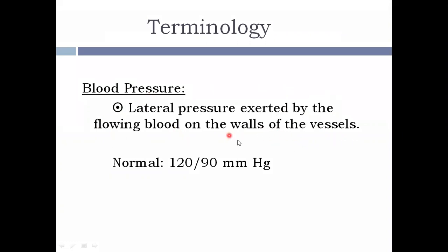We have a blood vessel with blood flowing in it. The blood exerts some force, some pressure on the blood vessel wall. This pressure is termed as blood pressure. When we term blood pressure in general, it can be arterial pressure, venous pressure, or capillary pressure.